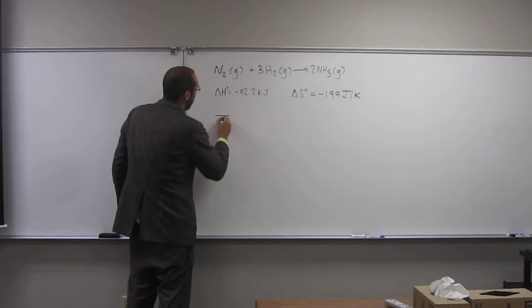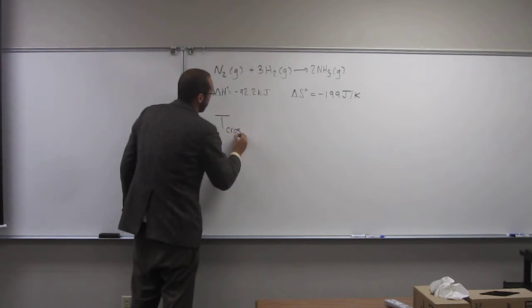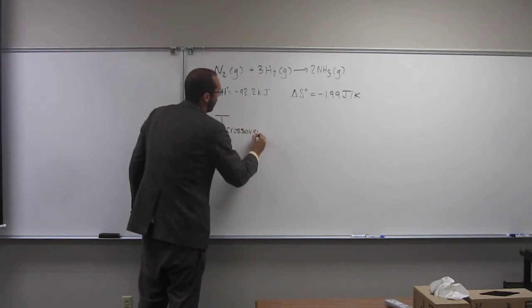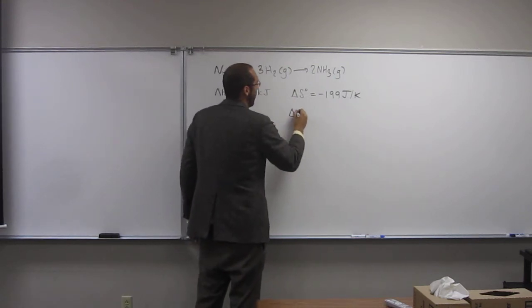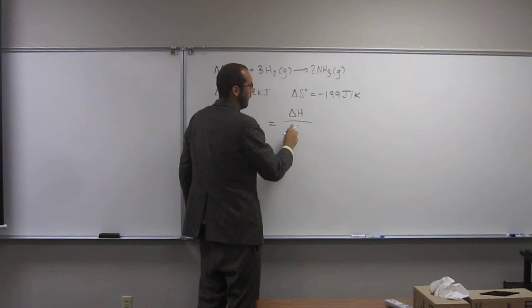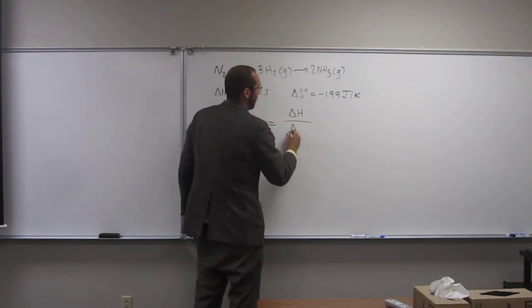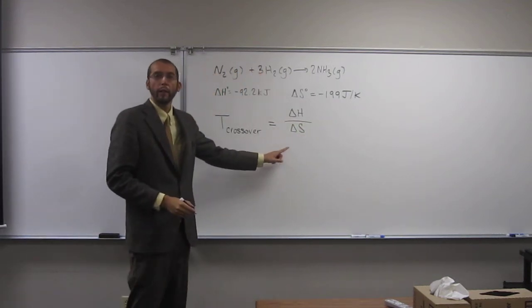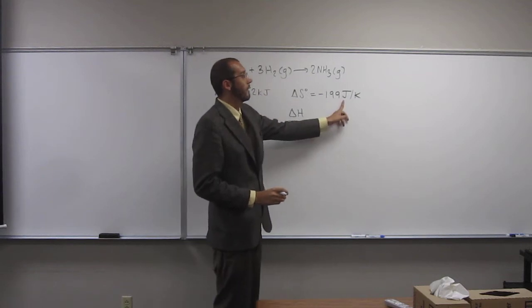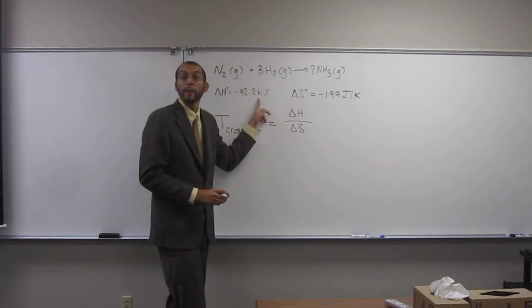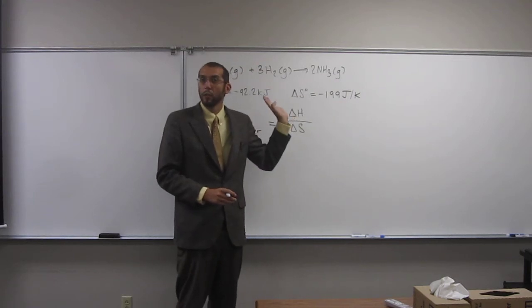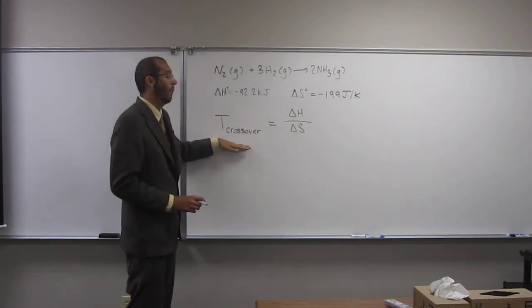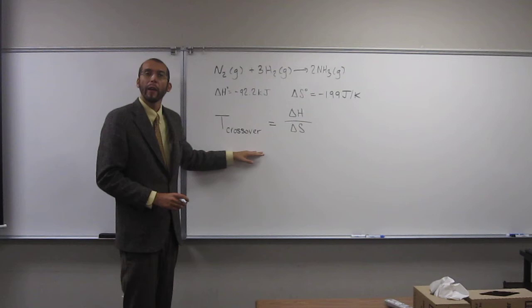So, temperature crossover equals what? What's up here? Delta H or enthalpy. And down here? Delta S or entropy. Okay, but notice these units are not the same units, so we're going to have to convert. Either joules to kilojoules or kilojoules to joules. What temperature units would we be expecting this to be in?